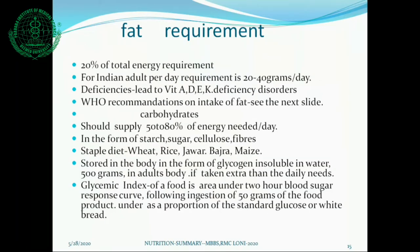Carbohydrates are the third proximate principle — around 50–80% of the energy needed by a person should come from carbohydrates in the form of starch, sugar, cellulose, and fibers. The staple diet — wheat, rice, jowar, bajra, or maize — provides the maximum calories. Excess calories consumed are stored in the body as glycogen, which is insoluble in water and stored up to 500 grams in the adult body.